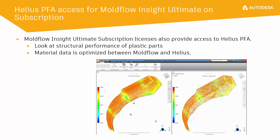In terms of market impact, we're looking at making technology available that allows people to solve new problems — things that people have been looking for us to add in the last couple of years. The first of those is that we made Helios PFA, which is our nonlinear structural interface, available on a Moldflow Insight Ultimate subscription license. This would allow you to run nonlinear structural analysis in Abaqus and Ansys, or evaluate things like the strength of weld lines, as part of the new Moldflow Insight Ultimate license.